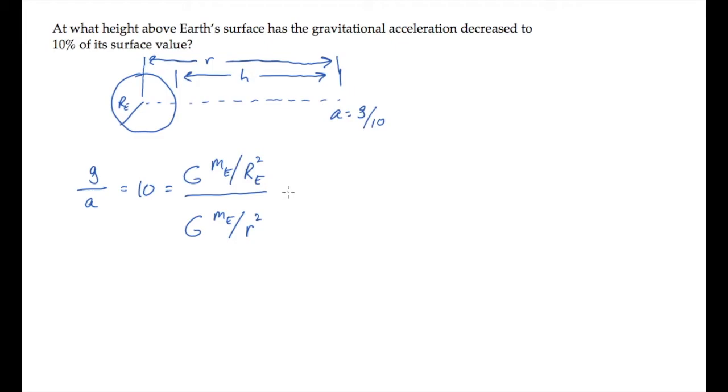We can cancel the common terms to see that 10 equals the square of the ratio of the radii, little r over the radius of the Earth. Solve this for the distance little r to see that it equals the square root of 10 times Earth's radius. That's 3.16 times Earth's radius.